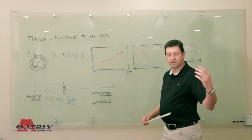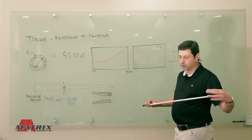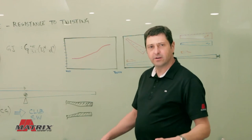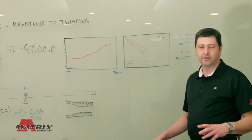And a high torque shaft is going to let the head rotate more. So how does torque influence a player during the swing?